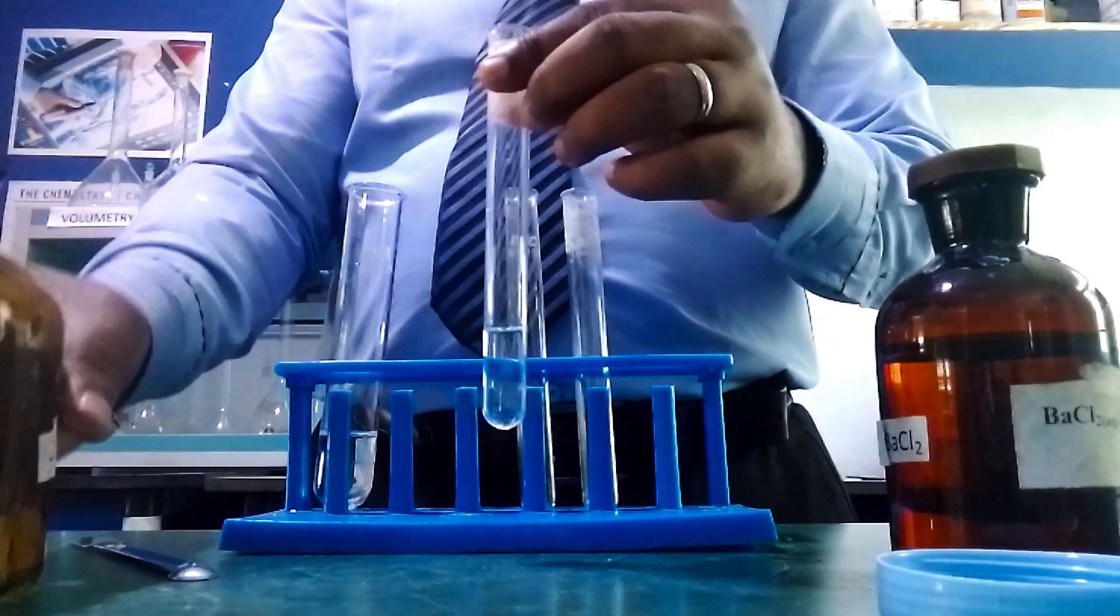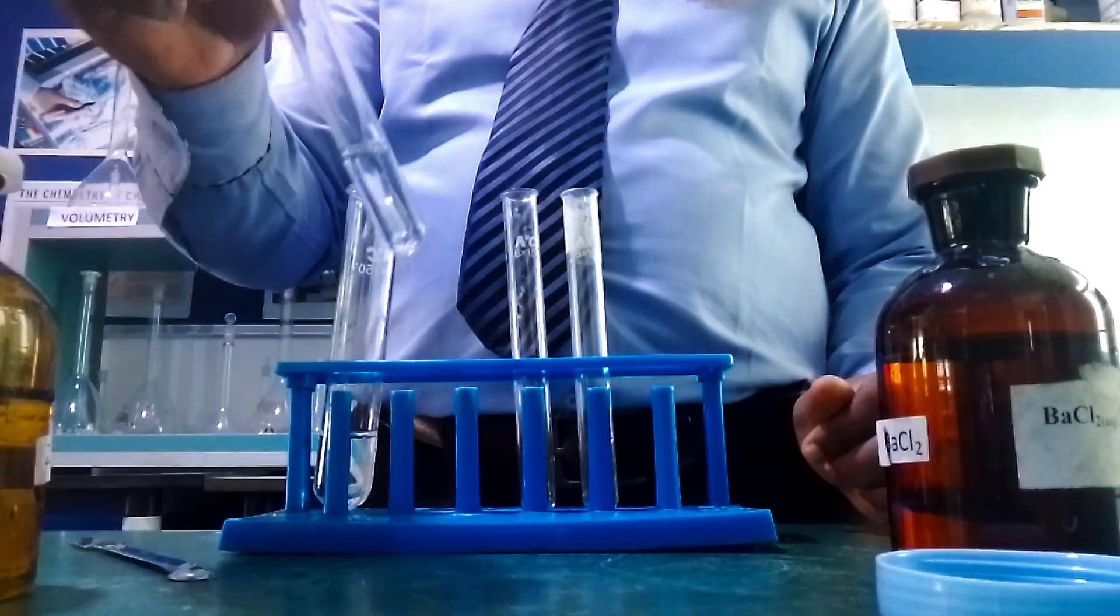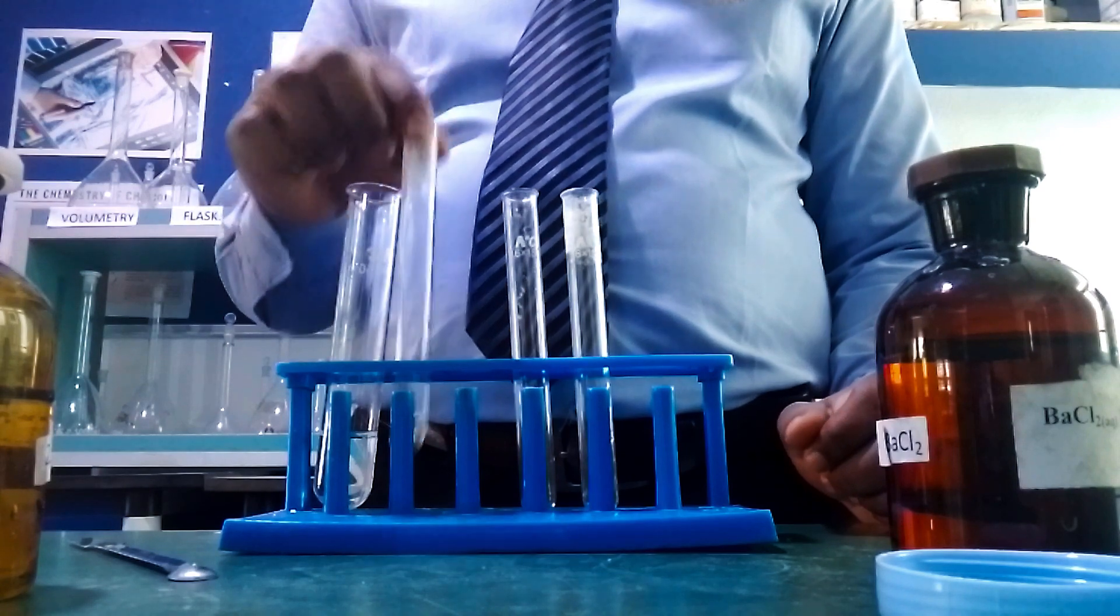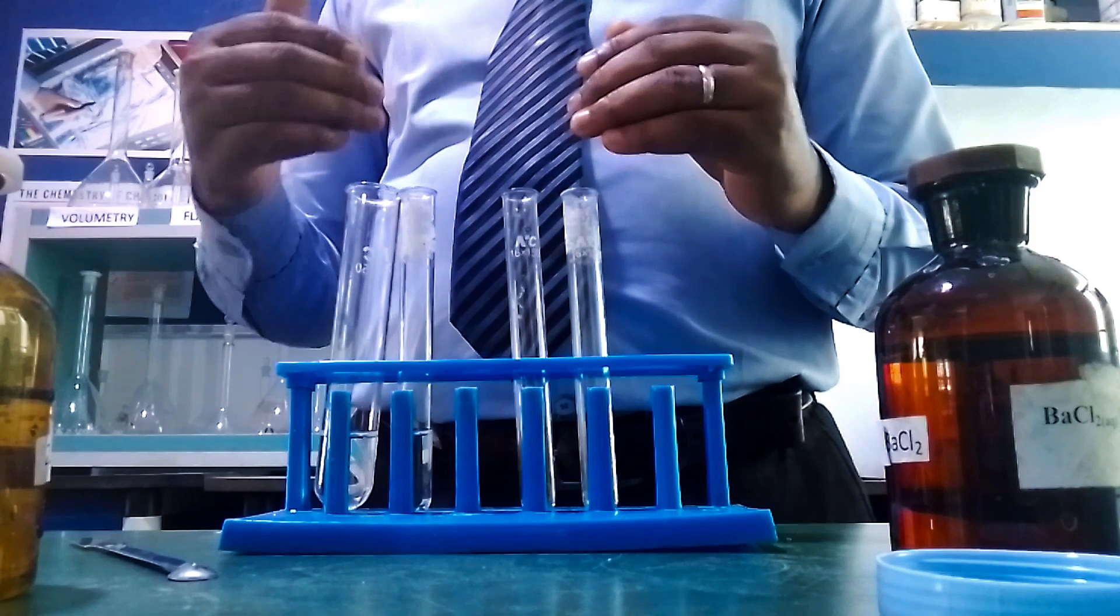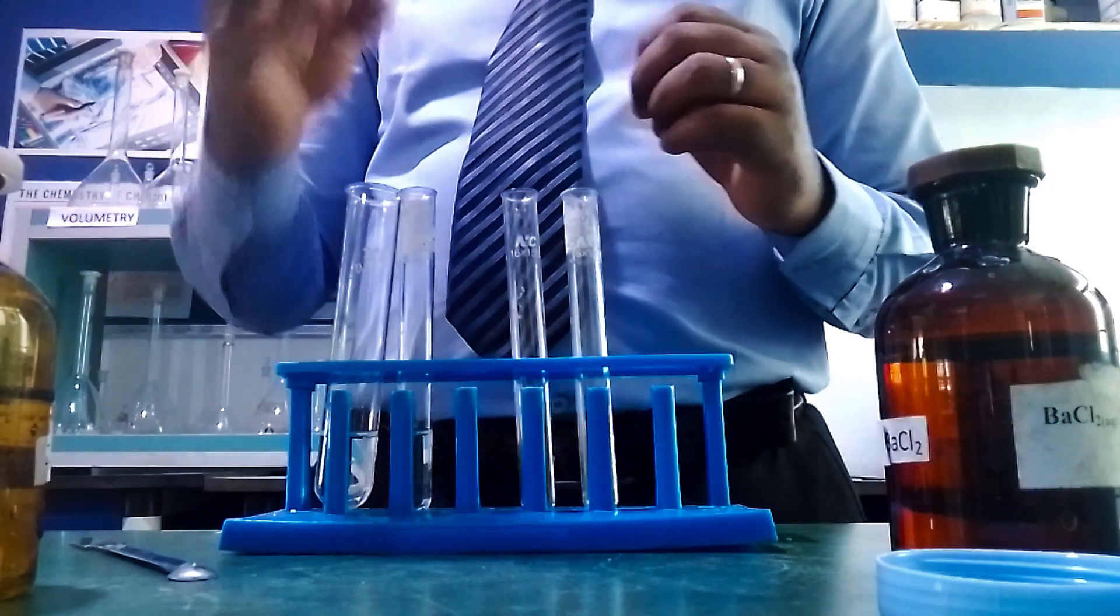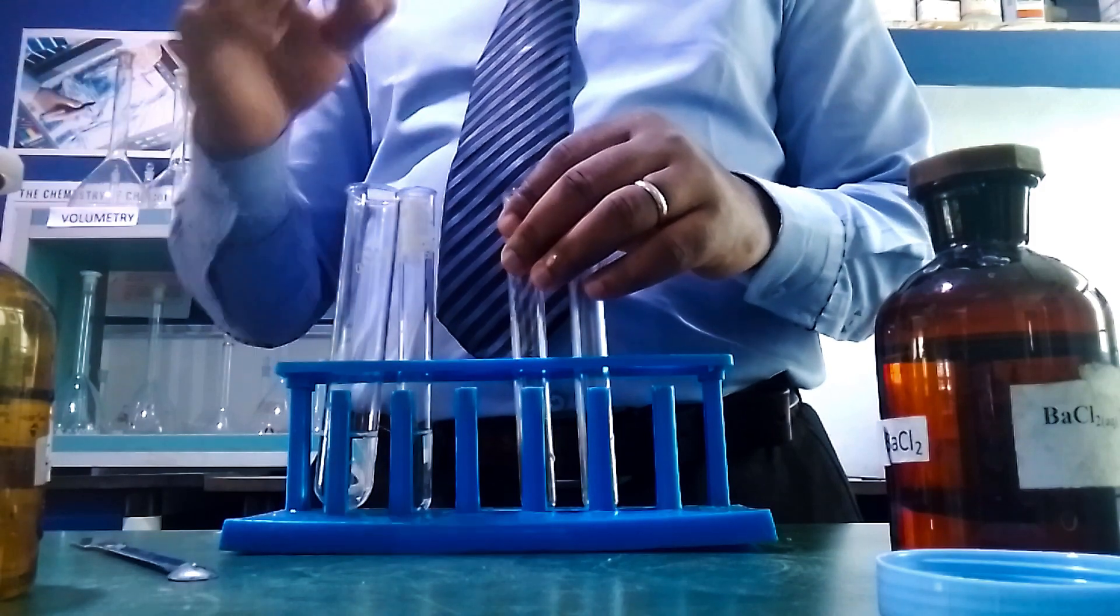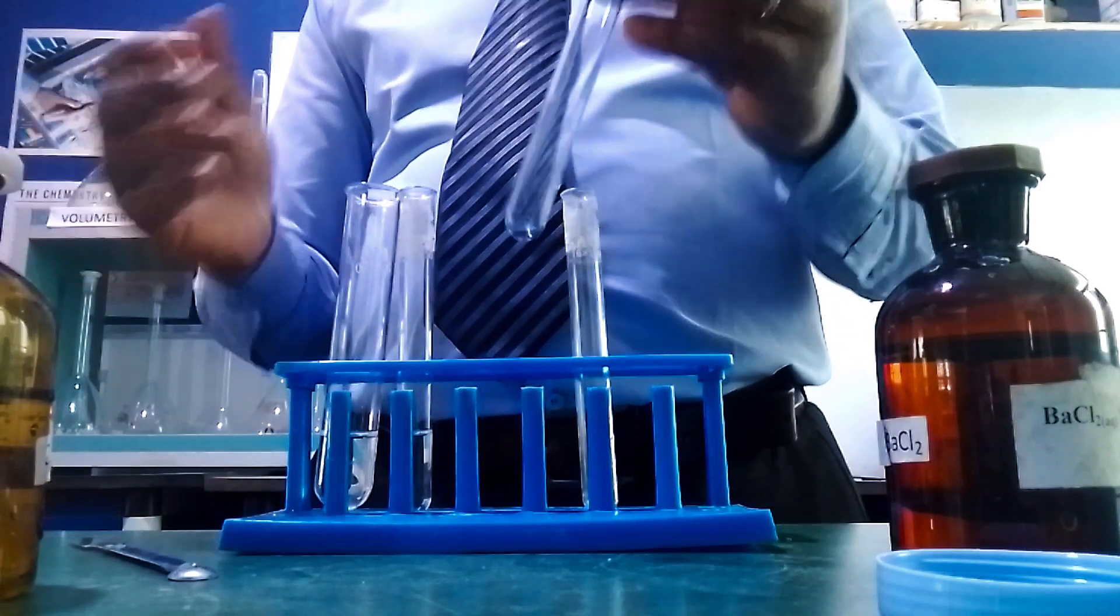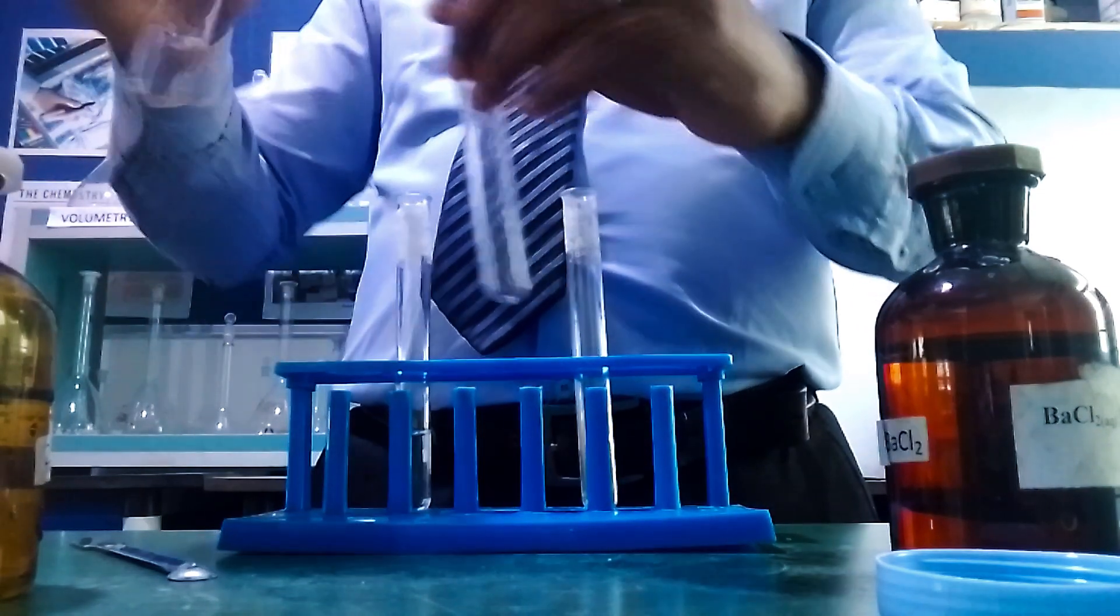This colorless, odorless gas produced when acid is added will turn moist blue litmus paper red and also turn lime water milky. Next test: take another portion of the solution.